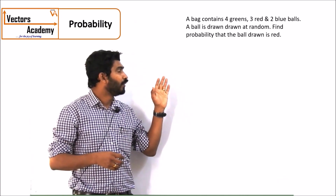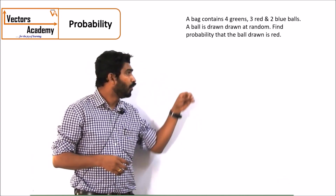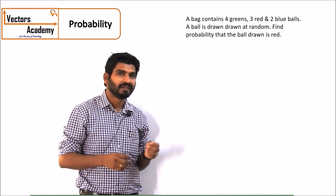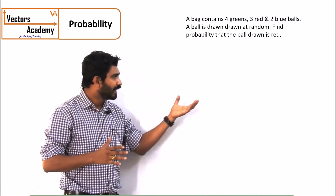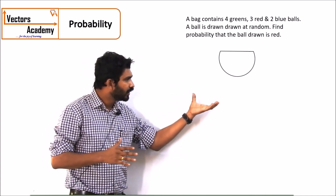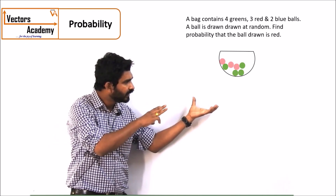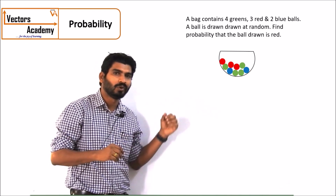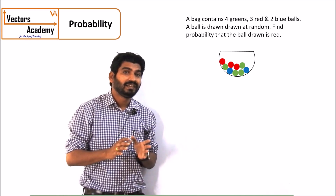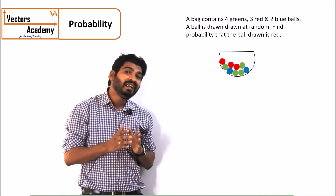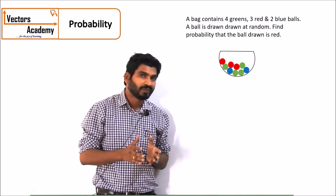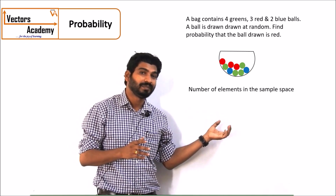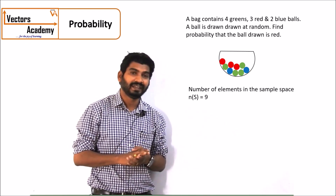We have to find the probability that the ball drawn at random from this bag is red. The bag contains in all 4 green, 3 red and 2 blue, that is 9 balls. So there are 9 different options to choose from, meaning the sample space contains 9 elements — n(S) = 9.